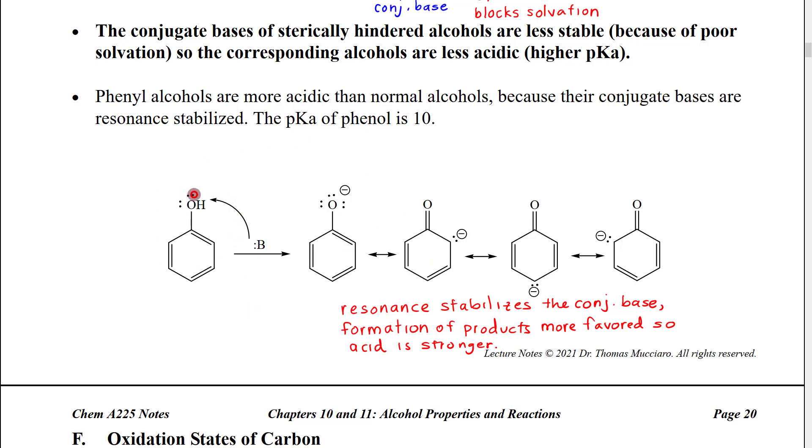So, when we deprotonate a phenyl alcohol, this particular phenyl alcohol is called phenol, it makes a negative alkoxide, but then through resonance by pushing here and pushing out there, we delocalize that negative charge onto several carbons of the ring. Then, that stabilizes that conjugate base, making this more favored, making that a stronger acid.